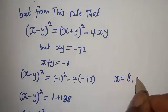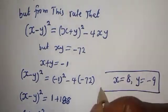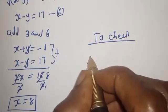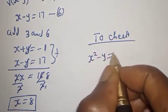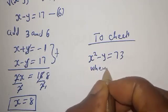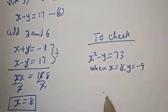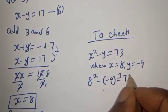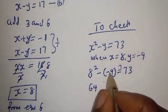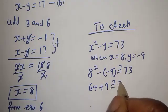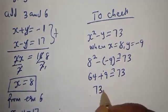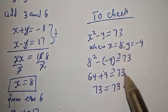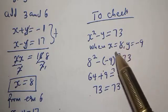Our final answers are x equals 8 and y equals minus 9. Let's verify using equation 1: x squared minus y equals 73. Substituting x equals 8 and y equals minus 9: 8 squared minus (minus 9) equals 64 plus 9 equals 73, which equals 73. This satisfies the given equation. Thank you for watching — don't forget to like, share, comment, and subscribe to my channel. Bye bye!